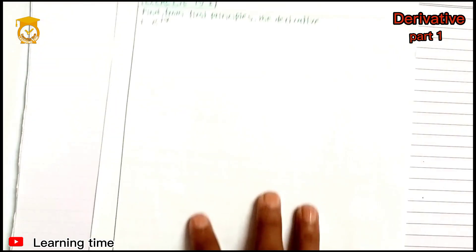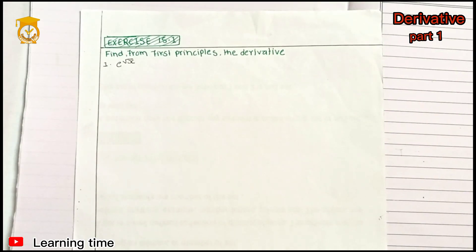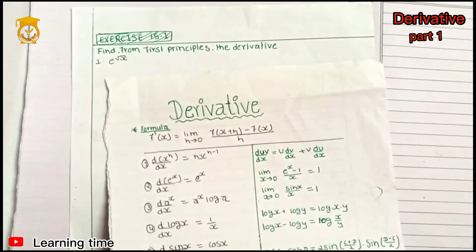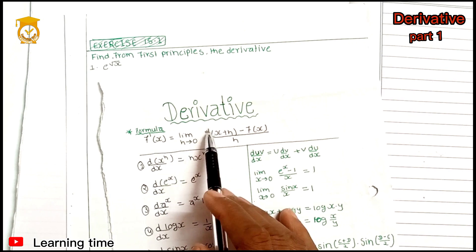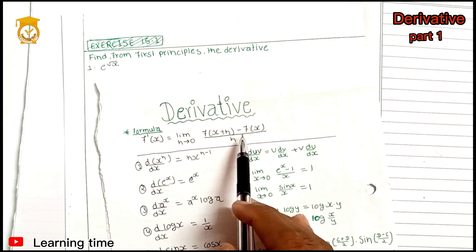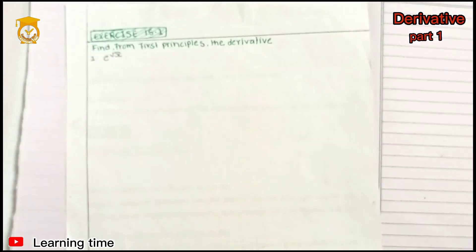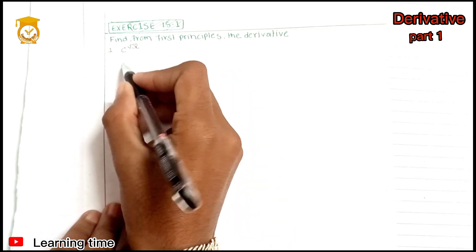I am going to find the first principle of the derivative. The function is e to the power root x. The formula is: derivative equals limit as delta x approaches 0 of [f(x plus delta x) minus f(x)] divided by delta x.